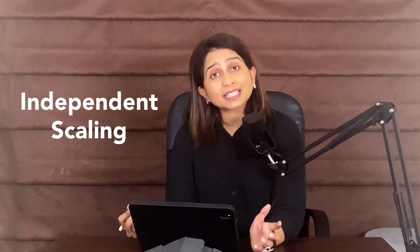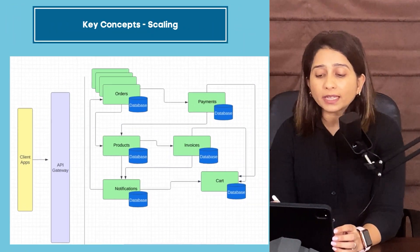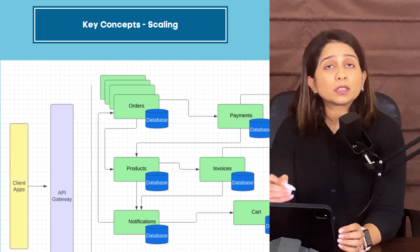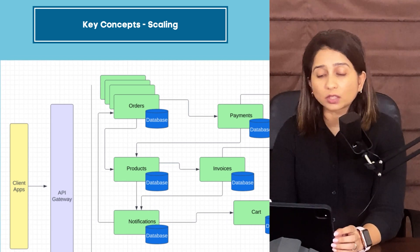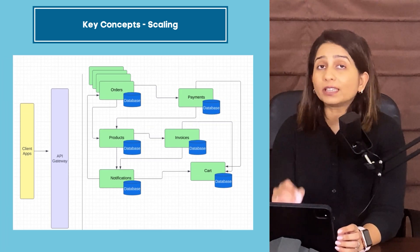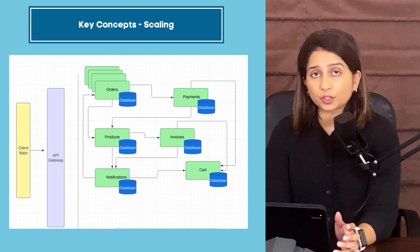Along with independent deployability, microservices also enable independent scaling. If there is huge demand on the order service, you can simply increment its instances without touching any other services — something that is not possible in a monolithic architecture.